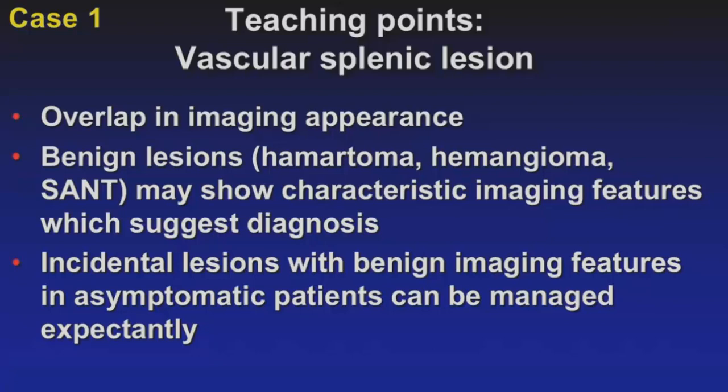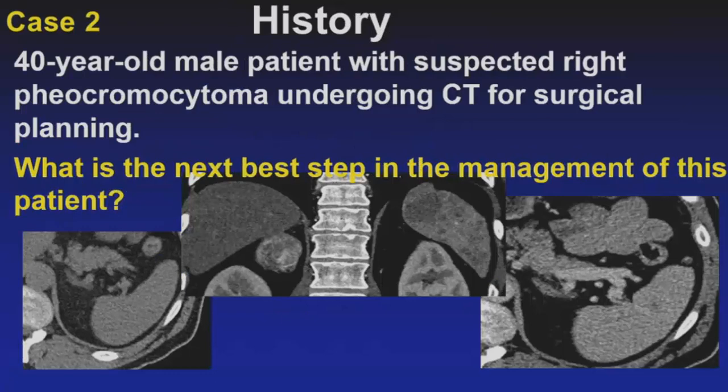Taking it back to the index case — the correct diagnosis is a hamartoma. Teaching points for vascular splenic lesions: there is some overlap in imaging appearance, but benign lesions such as hamartoma, hemangioma, and SANT may show characteristic imaging features suggesting the diagnosis. If you have an incidental lesion with benign imaging features in an asymptomatic patient, these can be managed expectantly — you don't need to proceed to biopsy.